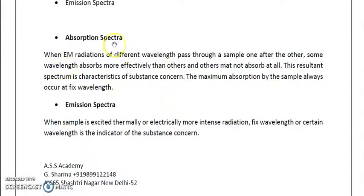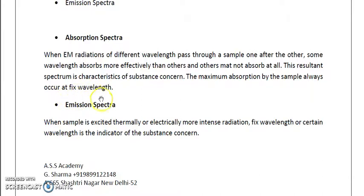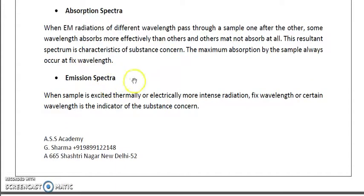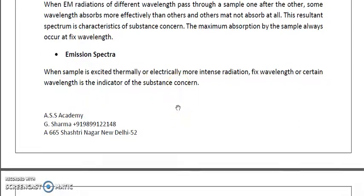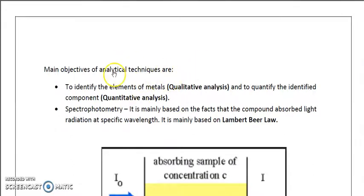When electromagnetic radiation of different wavelengths passes through a sample, some wavelengths are absorbed more effectively than others, while some may not be absorbed at all — because absorption is specific to particular wavelengths. In absorption spectra, the spectrum is characteristic of the substance's concentration, and maximum absorption always occurs at a fixed wavelength called lambda max. In emission spectrum, when the sample is excited thermally or electronically, intense radiation at a fixed wavelength indicates the substance of concern.